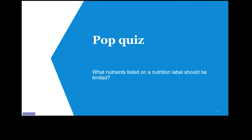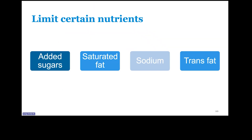What nutrients listed on the nutrition label should be limited? We have added sugars — eating too much added sugar makes it difficult to meet our nutrition needs within your calorie requirements. We want to limit saturated fats because saturated fats and trans fats are linked to increased risks of heart disease. We want to limit sodium because high levels of sodium can add up to high blood pressure. And you also want to limit trans fats.